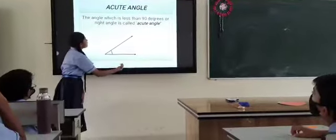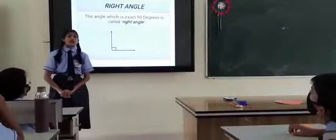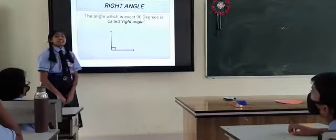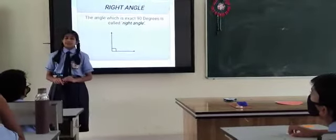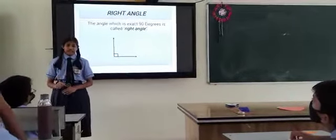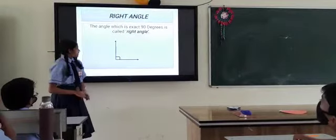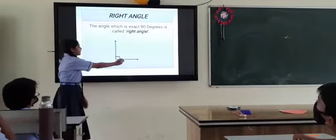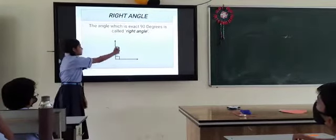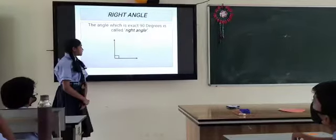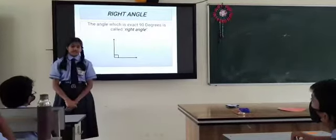Now let's move on with another angle which is right angle. So what is right angle? The angle which is exactly the measure of 90 degrees is called a right angle. Here you can see it is a right angle which is 90 degrees.